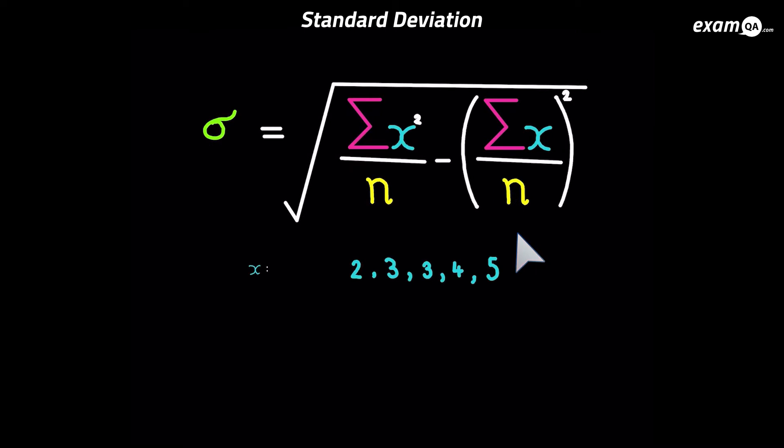Okay so here I've got some values. So 2, 3, 3, 4 and 5. And we're going to work out the standard deviation for these values. So first we know n is 5. Remember n is how many terms you've got. And we can clearly see there's 5 values here.